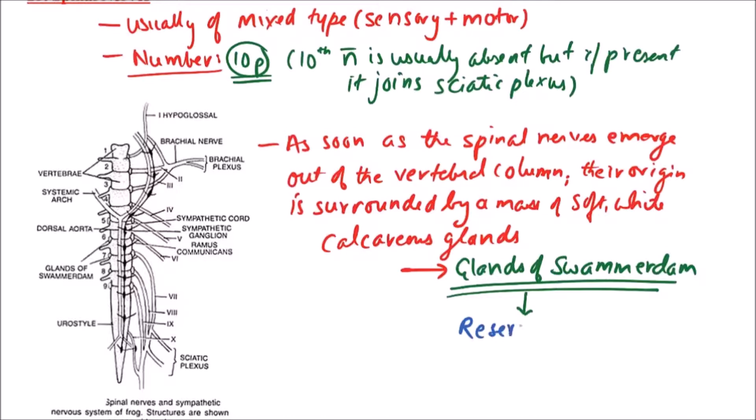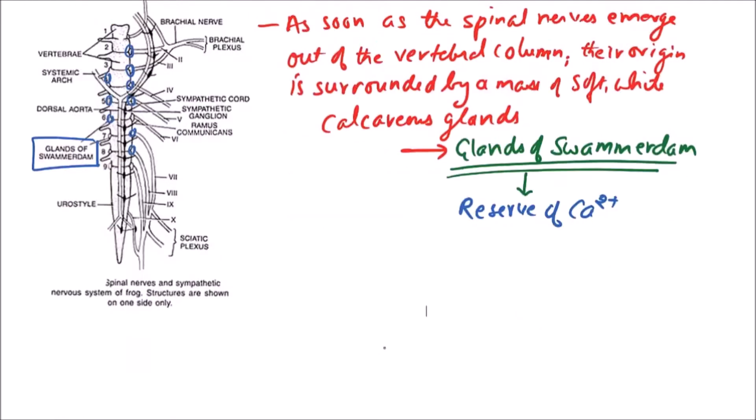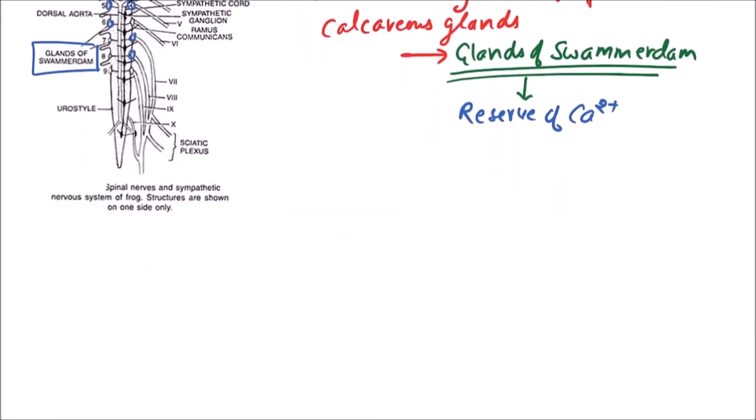Now what is the function of glands of Swammerdam? These are reserve of calcium. We can observe the glands of Swammerdam here, on both sides when the spinal nerve emerges out of the vertebral column.